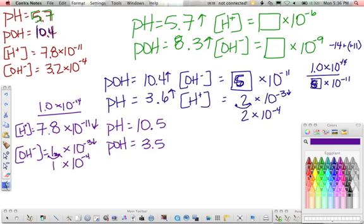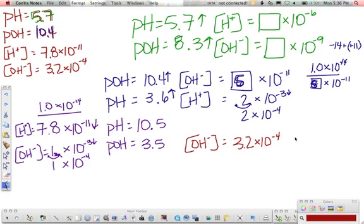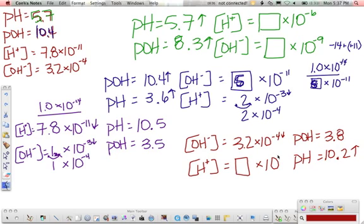Last one. Hydroxide ion concentration of 3.2 times 10 to the negative 4. So our pOH is going to be, take this number, kick it down one. So it's going to be 3 point something. Our pH is going to be 14 minus this. Let's just say it's 3.8. If we took 14 minus 3.8, you're going to get 10.2. Now coming back this way to our hydrogen ion concentration is going to be equal to something times 10 to the, kick that up, negative 11.